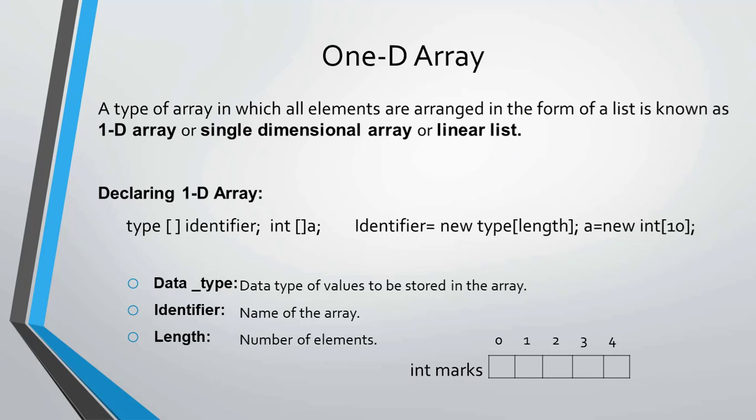A one-dimensional array is also known as a single-dimensional array or linear list. Declaring a one-dimensional array uses the syntax: type identifier = new type[length]. For example: int A = new int[10]. The data type specifies the type of values to be stored in the array, the identifier is the name of the array, and the number specifies the number of elements. You can see on the screen the declaration of a one-dimensional array.